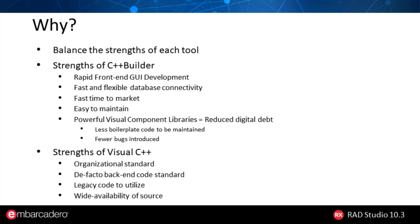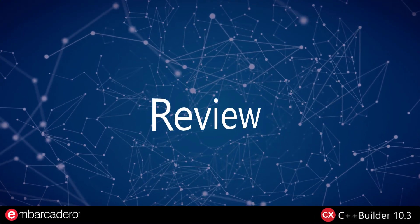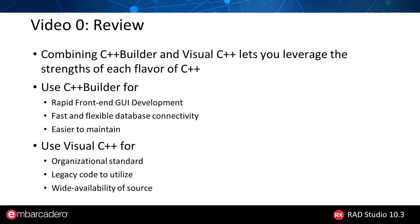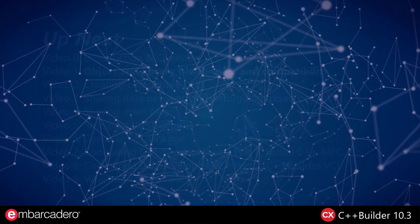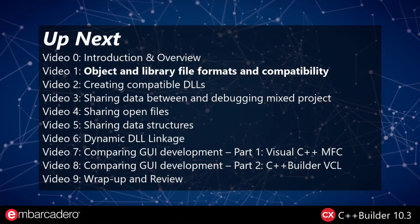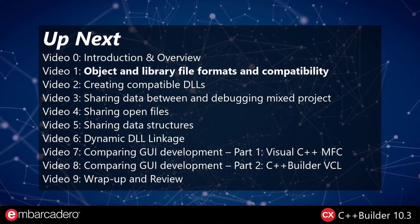That's it for Video Zero. In this video, we learned that combining C++ Builder and Visual C++ lets you leverage the strengths of each flavor of C++. You can use C++ Builder for rapid front-end GUI development, fast and flexible database connectivity, and easier-to-maintain projects. You use Visual C++ if it's the organizational standard, if you have legacy code to utilize, or to take advantage of the widely available source that comes with Visual C++. Up next, we learn all about object and library file formats and their compatibility between both Embarcadero C++ Builder and Microsoft Visual C++.